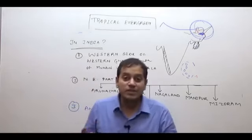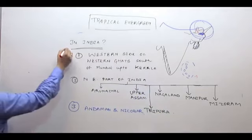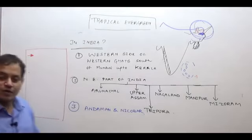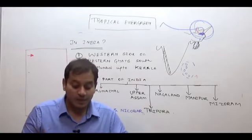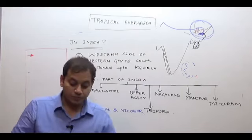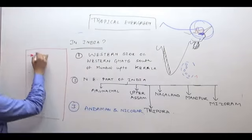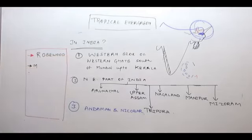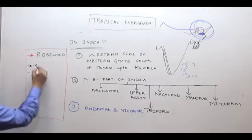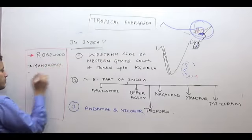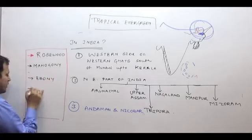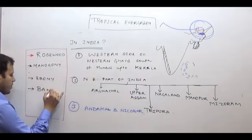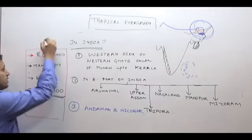Now, the important tree species of the tropical evergreen region are: rosewood, mahogany, ebony, and bamboo — the versatile bamboo that can grow in any region. These are the important species of the tropical evergreen forest. Remember, these species are also found in the tropical semi-evergreen region.